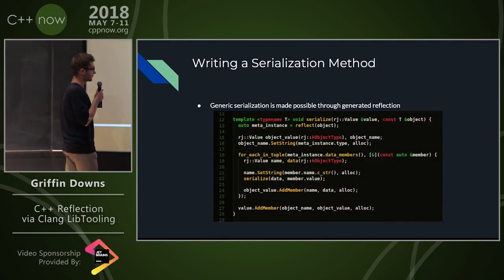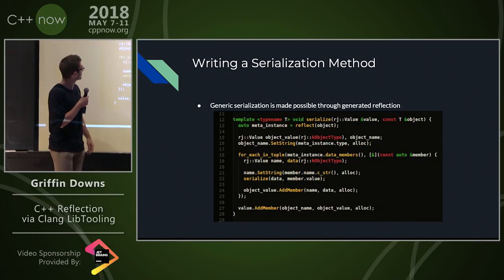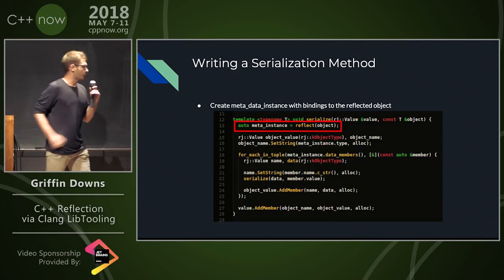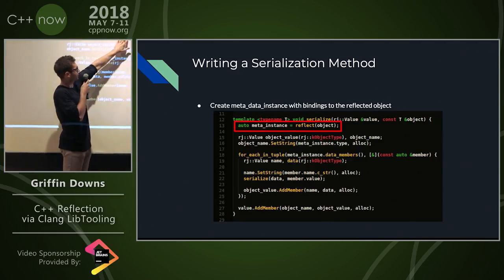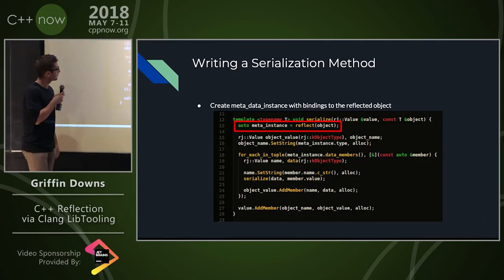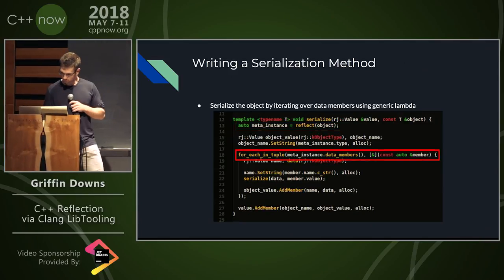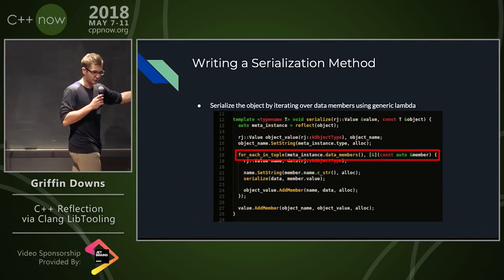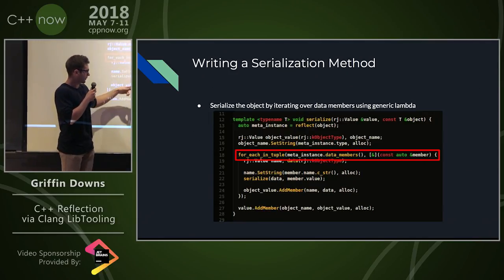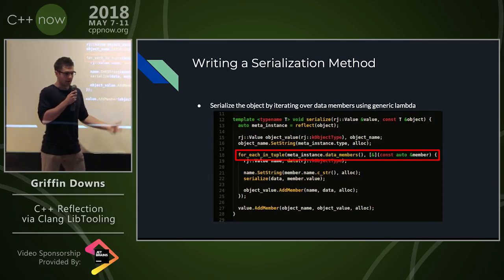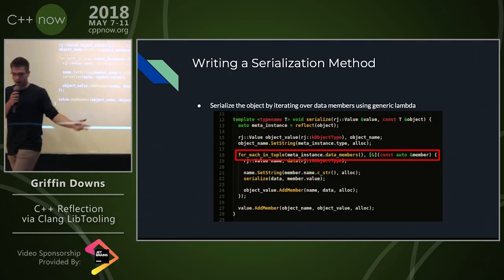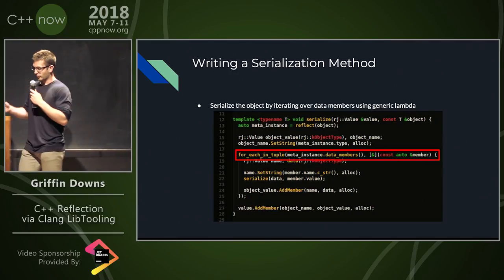We can use this to do something like writing generic serialization. Where this comes in is we simply call this function called reflect, given the object, and it returns to us a meta instance. We could be using std::apply here — C++17. We have some kind of for-each on a tuple, and we just operate on the data members that were generated by the lib tool, iterating over each member and operating on the information.